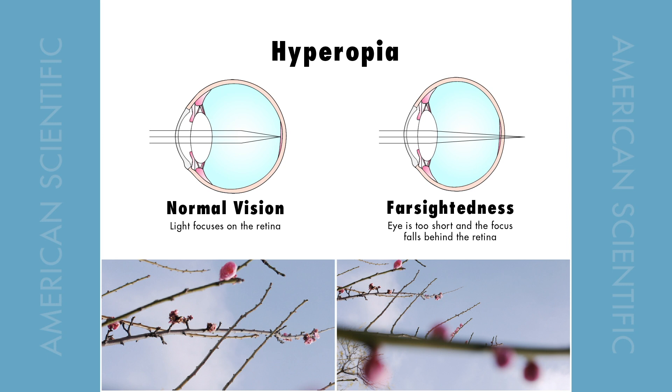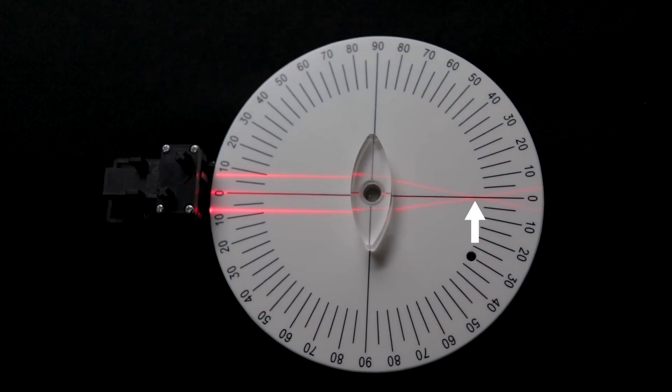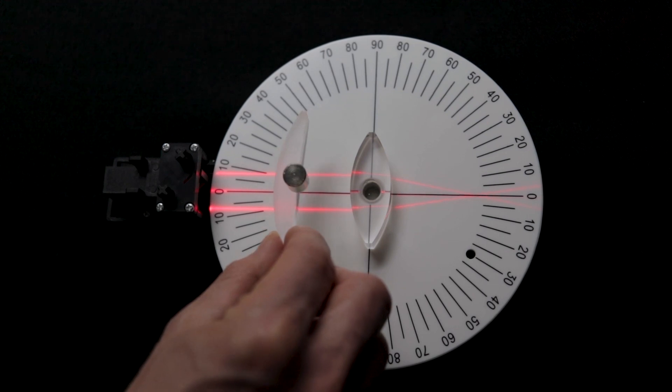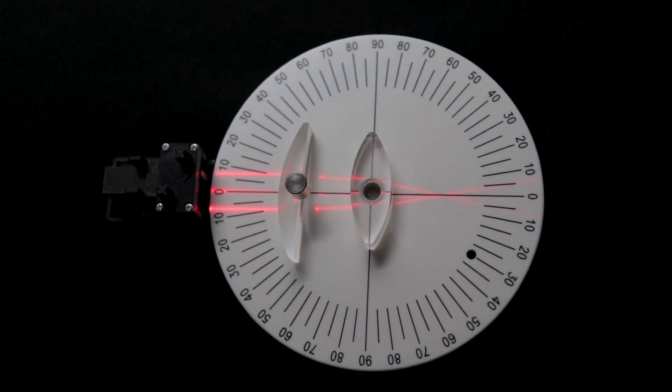For those with farsightedness, when light enters the eye the focus falls beyond the eyeball and the light does not reach the retina in focus. This is often referred to as hyperopia. To demonstrate this, first note where the focus from the biconvex lens falls. Now place the plano convex lens in front of the biconvex lens and you'll see how the focus point changes — notice that the focus falls much closer to the biconvex lens. In patients with farsightedness doctors use a convex lens in glasses to correct vision, and in patients with nearsightedness doctors use concave lenses.